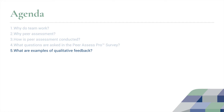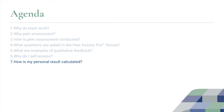We'll also be looking at some examples of the qualitative feedback that you might use in giving feedback to your team members. You'll also find that you're required to do a self-assessment. We'll explain how your personal result is calculated from your team result and the assessments of the other members of your team.